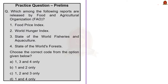Which among the following reports are released by FAO: Food Price Index, World Hunger Index, State of World Fisheries and Aquaculture, State of World Forests? The correct answer is option A: 1, 3, and 4 only. Because the Global Hunger Index is a peer-reviewed annual report jointly published by Concern Worldwide and Welthungerhilfe, not FAO.